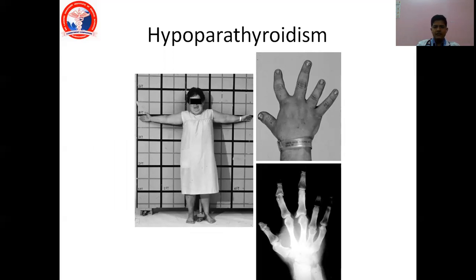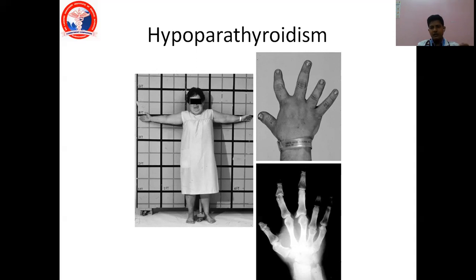Clinically, this child with Albright's Hereditary Osteodystrophy has short stature, obesity, a round face, and short stubby fingers — especially the ring finger, which is much shorter than expected. The corresponding radiological image shows shortening of the fourth metacarpal. This constellation is AHO. Most of the time it is associated with resistance to parathyroid hormone, giving rise to clinical hypoparathyroidism. But since blood parathyroid hormone is more than normal and it is end-organ resistance, we call it pseudo-hypoparathyroidism.